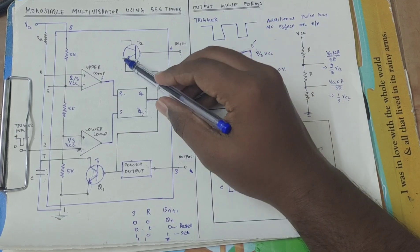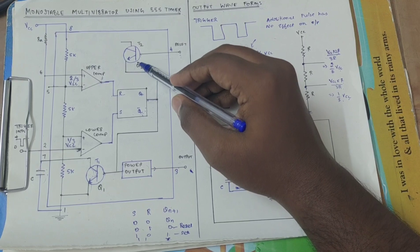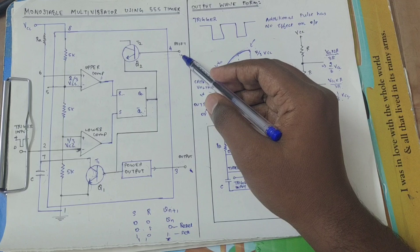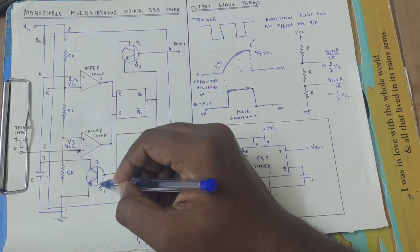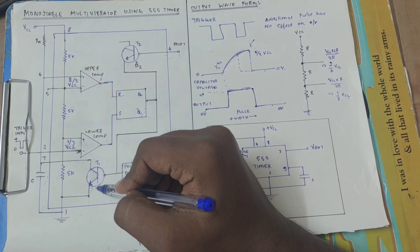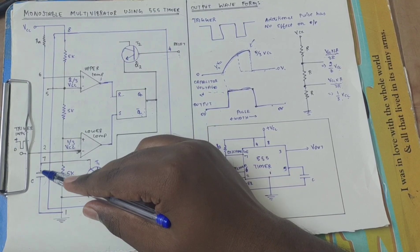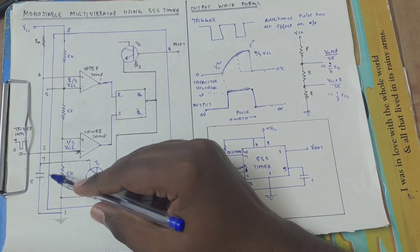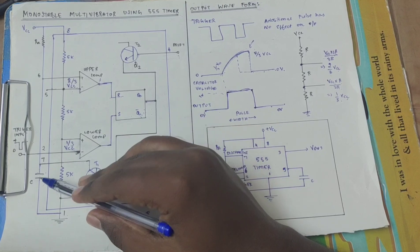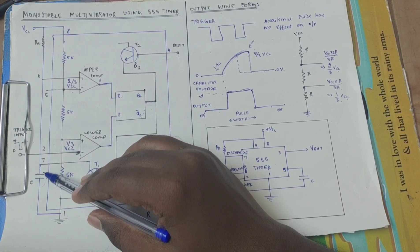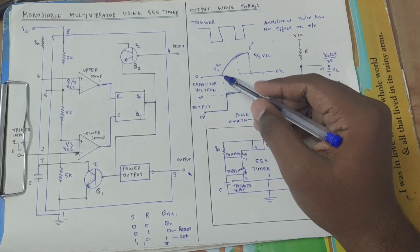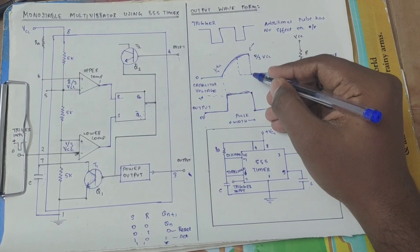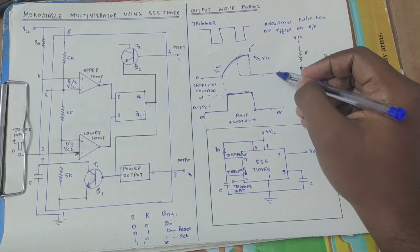If we press the reset button, what will be 0 is: transistor T2 is off, so Q2 will be off. At the same time Q1 will be on. That is why we reset. That will be a negative impulse.